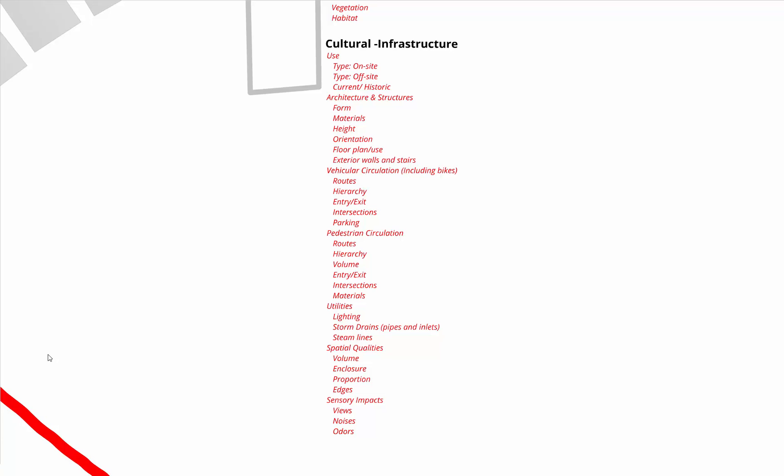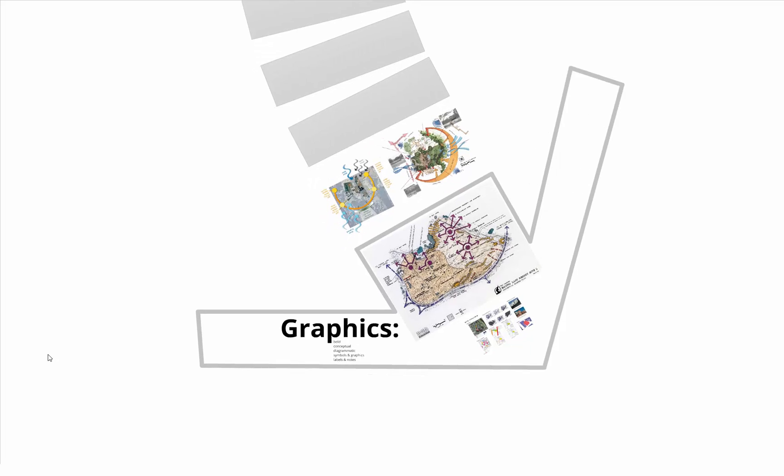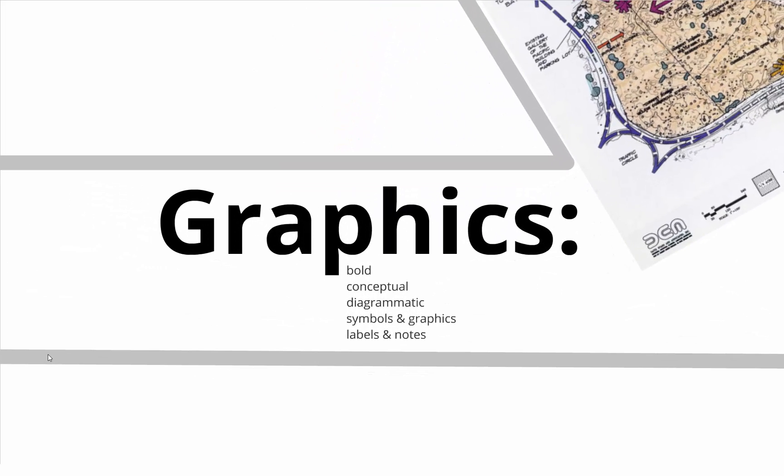Spatial qualities — how do you feel when you're out there? It's pretty open right now. Sensory impacts of things like views, noises, and even odors. You can refer back to this checklist — we're not expecting you to check off every single thing on here, but it gives you a good idea. If you haven't thought about some of these things, you might want to, and sometimes it's just simply noting them on the plan.